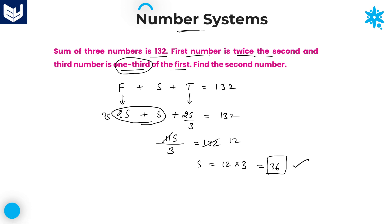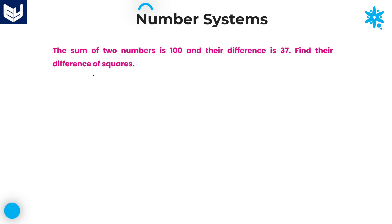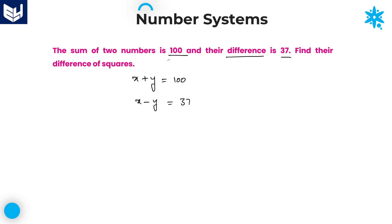Let's move on to the next question. Sum of two numbers is 100. Let us take two numbers x and y. Sum of two numbers: x plus y equals 100. And their difference: x minus y equals 37.